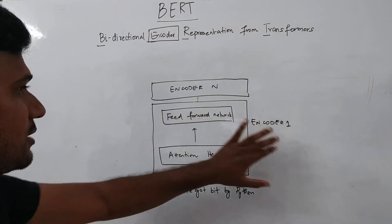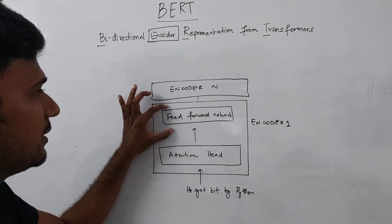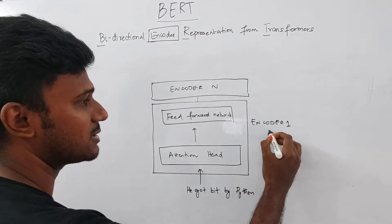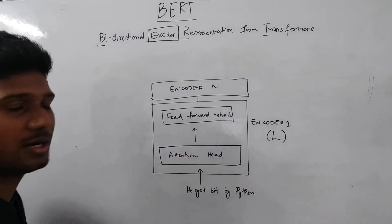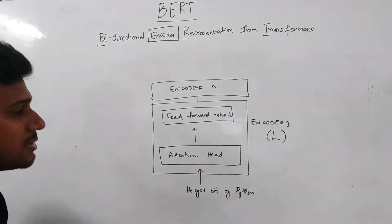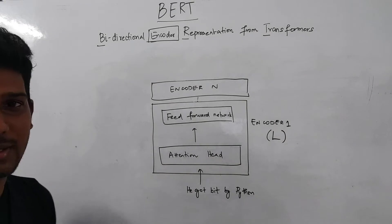Now inside, we know that this encoder 1 will have an attention head and then followed by feed forward network. So this encoder is basically represented with the letter capital L. And the attention head is basically the self-attention and that is also sometimes called attention head and sometimes called multi-attention.